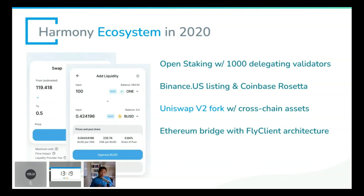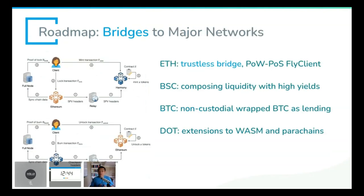Our innovation is really about building a trustless and gas-efficient bridge. The fly client architecture — inspired by Zcash — uses a Merkle mountain range so that you can aggregate signatures and push them back to Ethereum. We have a research white paper that came out two months ago showing that this is a long-term trustless approach to build the hub.